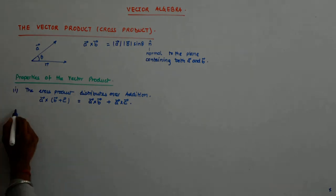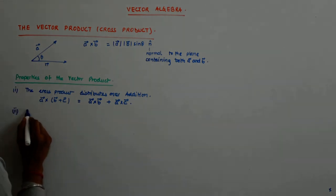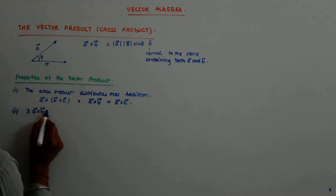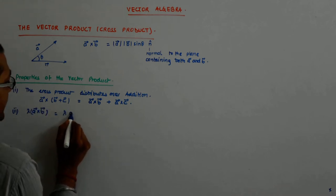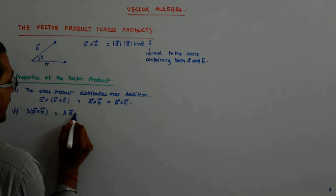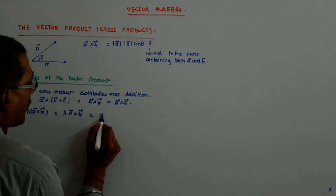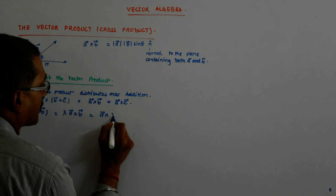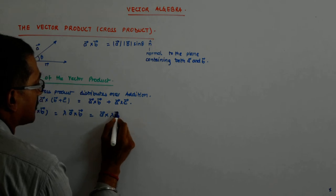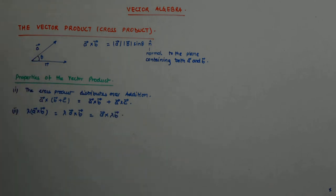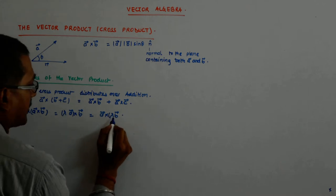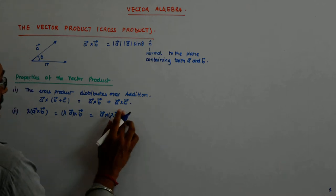The second property says: if it is lambda times (a cross b), then it can be written as (lambda a) cross b, or equivalently as a cross (lambda b). You can move the scalar to either vector.